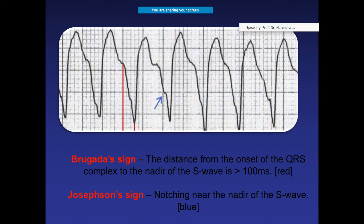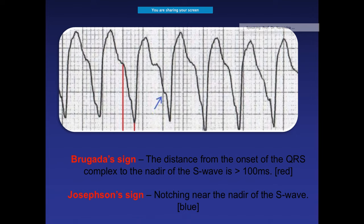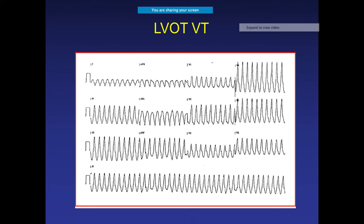Continuing from earlier — the Brugada sign: measure the distance from where the QRS starts to the nadir of the S wave; if this is more than 100 milliseconds, it is Brugada sign positive. The Josephson sign is a notching near the nadir of the S wave. If you see either the Brugada sign or the Josephson sign, you can confidently say this is VT and proceed with appropriate management.